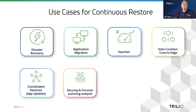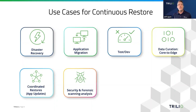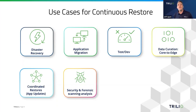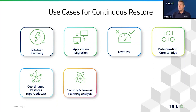Security and forensic scanning is another use case. Trilio does not use any proprietary format for our backup files — we store all backup files in open Linux formats so that you can do other things with your backup data, like security and forensic scanning analysis. For example, you can use continuous restore to send data back to a backup target and then use a security tool to scan it for ransomware.